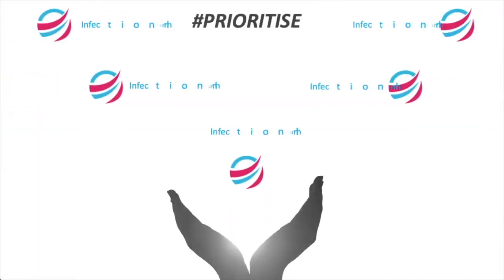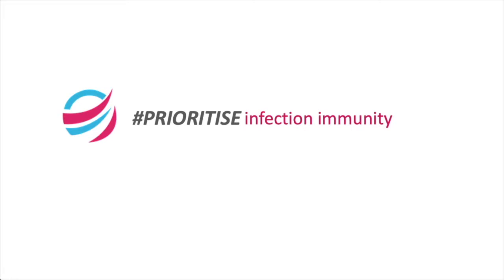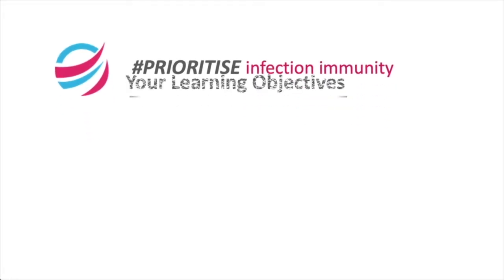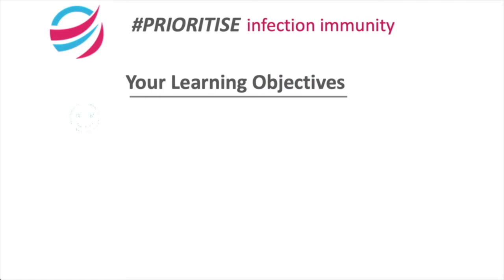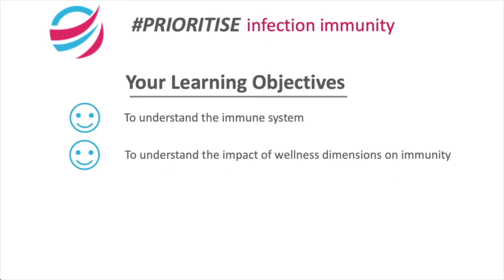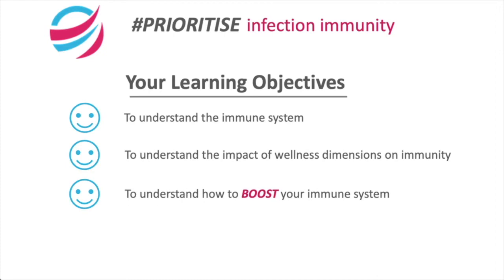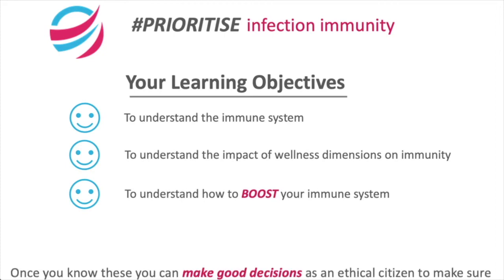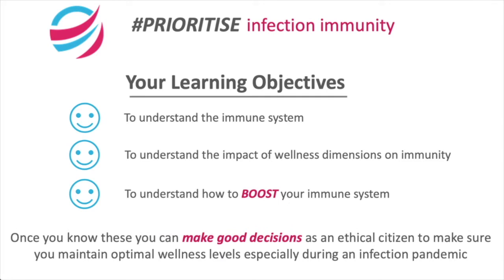Welcome to Transcend Awards. Prioritise Infection Immunity. Your learning objectives are: to understand the immune system, to understand the impact of wellness dimensions on immunity, and to understand how to boost your immune system. Once you know these, you can make good decisions as an ethical citizen to make sure you maintain optimal wellness levels, especially during an infection pandemic.